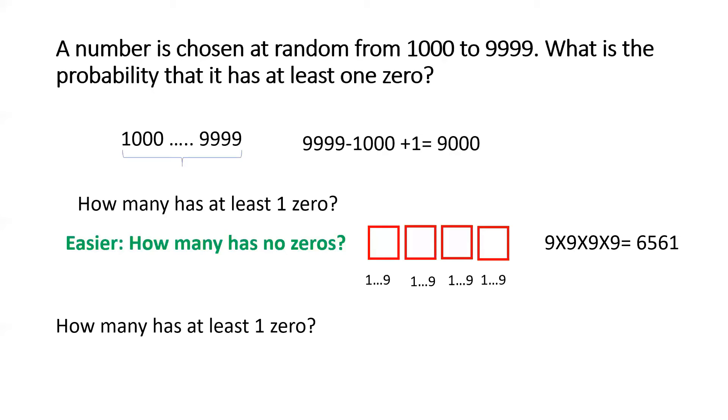So, how many has got at least one zero? That would be simply: you subtract 6561 from the total number of numbers you have from 1000 to 9999, which is 9000. So, you get 9000 minus 6561, which is 2439. The probability that the chosen number has at least one zero would be 2439 divided by 9000 and that comes to 271 by 1000. So, that's the probability in this case.